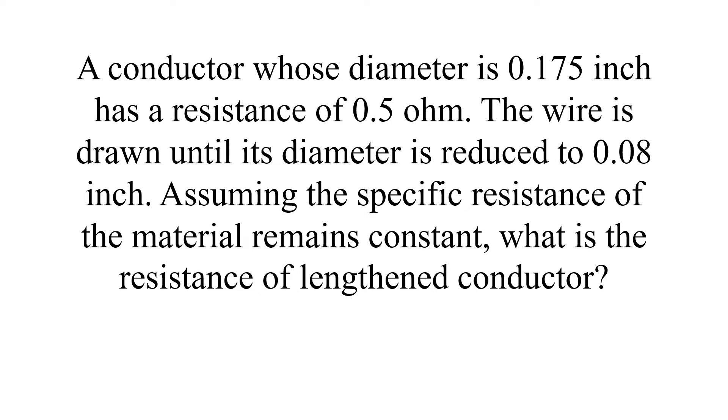A conductor whose diameter is 0.175 inch has a resistance of 0.5 ohm. The wire is drawn until its diameter is reduced to 0.08 inch. Assuming the specific resistance of the material remains constant, what is the resistance of the lengthened conductor?